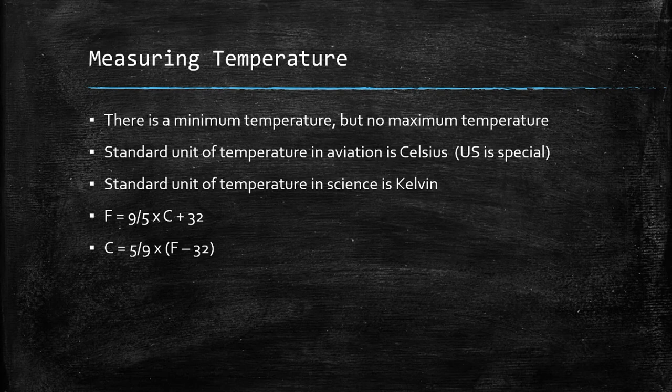The standard unit of temperature in aviation is Celsius. Celsius was designed with the freezing point of water at zero on the scale and the boiling point of water at 100 on the scale. The US is special and still uses Fahrenheit, which has the freezing point of water at 32 and the boiling point at 212. In science, the standard unit for temperature is Kelvin. The Kelvin scale matches Celsius other than that zero is absolute zero rather than in Celsius where absolute zero is minus 273-ish. I'm not convinced that you'd ever really need to convert between Fahrenheit and Celsius without either an electronic computer or at the very least a flight computer, but just in case, I've included the equations for doing so on screen.